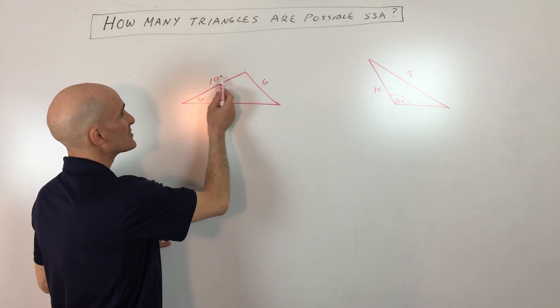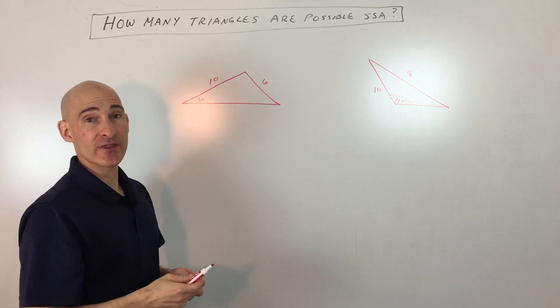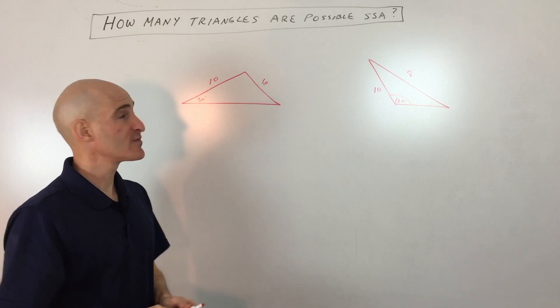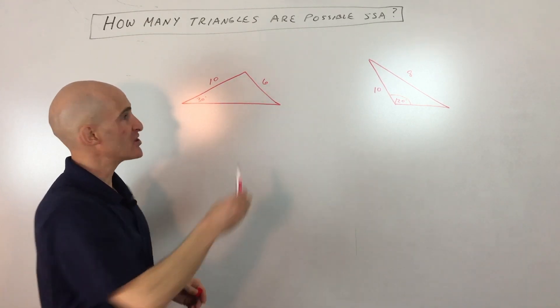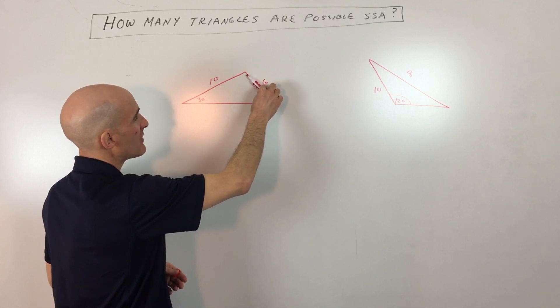You've got two sides and an angle, and that's all they give you. The reason it's ambiguous or unclear is because we don't know what this angle is. It's not a rigid situation, meaning it's possible we can maybe